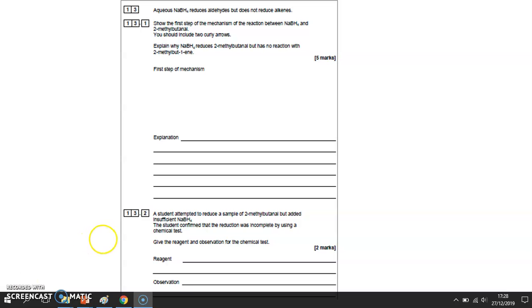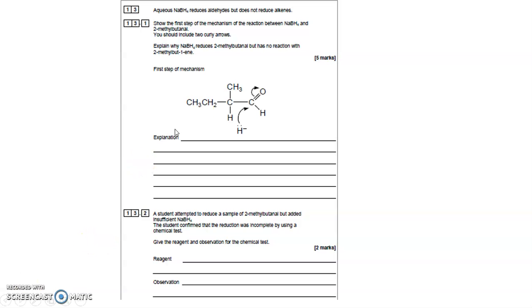So the first step of the reaction is where the hydride ion, so that's a H- ion from sodium borohydride, don't try and draw NaBH4 in a mechanism, it makes hydride ions, H- with a lone pair of electrons, and it attacks that C+, C-delta-plus.